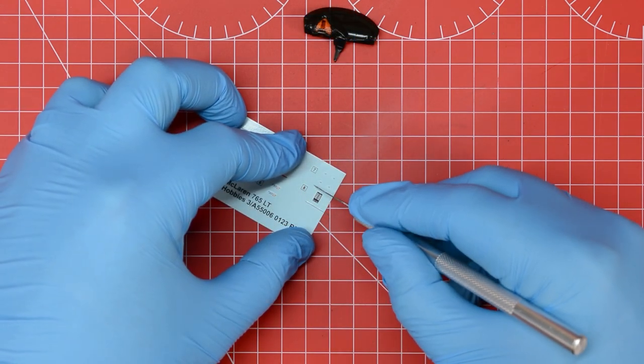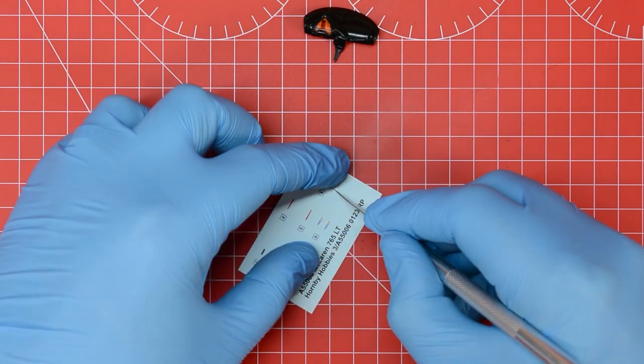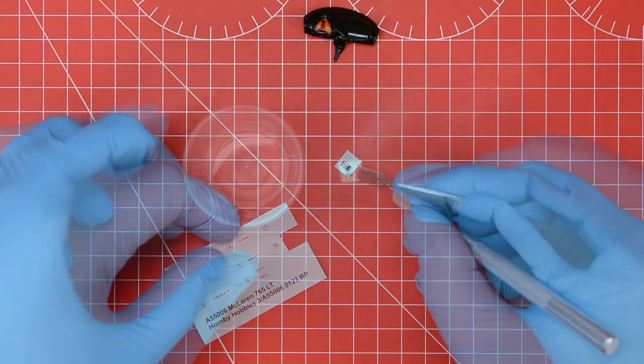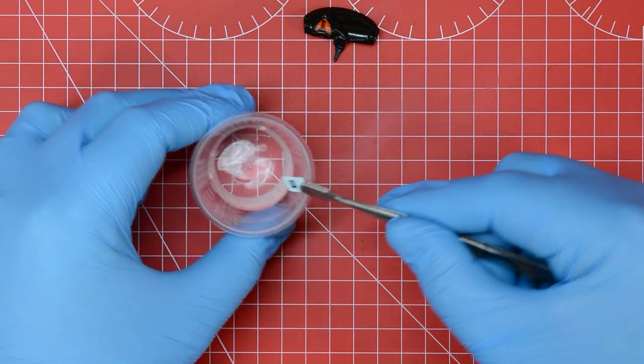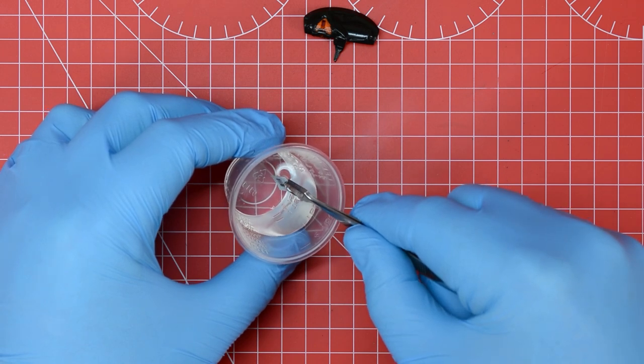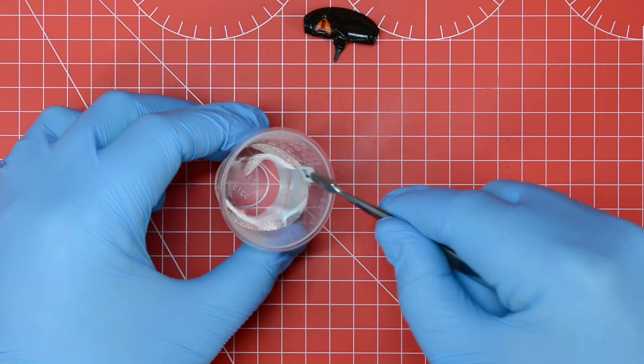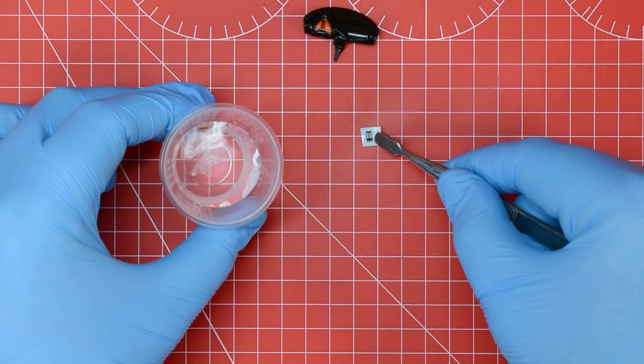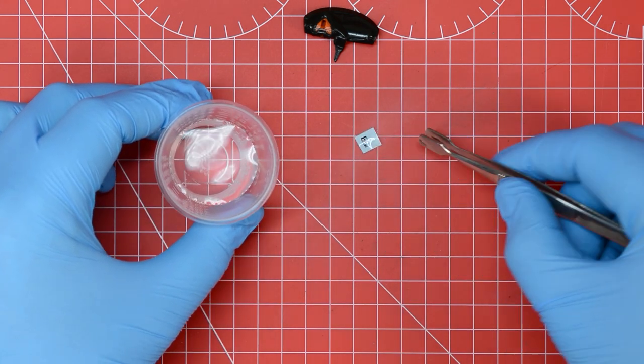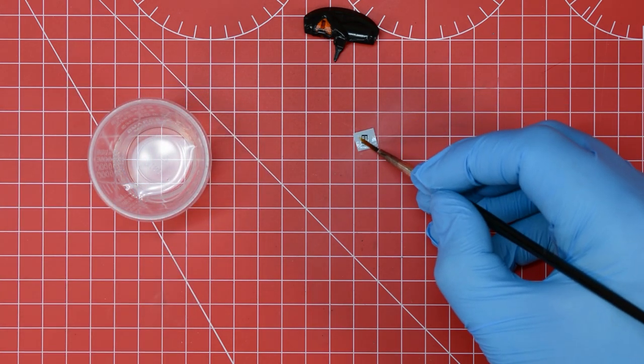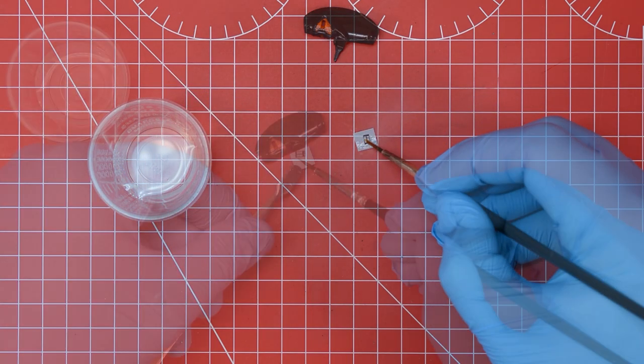To apply the markings we first cut the required one from the backing sheet using the modelling knife, then we use tweezers to immerse this in ordinary tap water for just a few seconds and set it aside to soak for a couple of minutes. When it's ready the water will have softened the adhesive and the transfer will slide around under gentle pressure from the paintbrush.